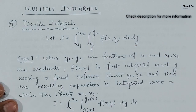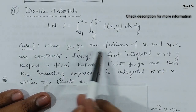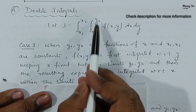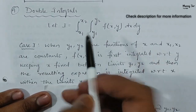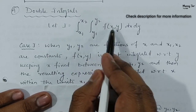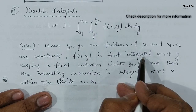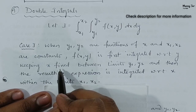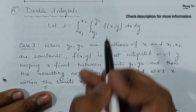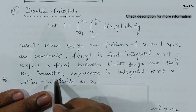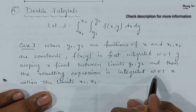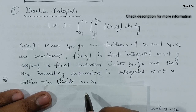In Case 1, y1 and y2 are functions of x, while x1 and x2 are constants. In this case, the function f(x, y) is first integrated with respect to y, keeping x fixed, between the limits y1 and y2. Then the resulting expression is integrated with respect to x, whose limit ranges from x1 to x2.